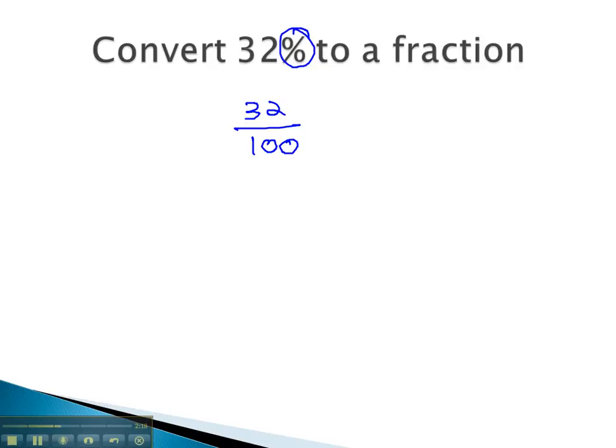Of course, fractions are never final until they're reduced. You might notice both of these numbers, 32 and 100, are even, so we'll divide them both by 2. 32 divided by 2 is 16, and 100 divided by 2 is 50.